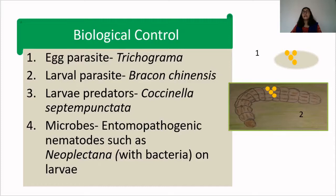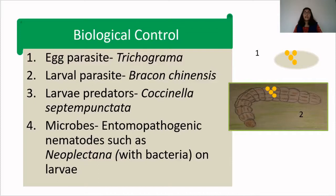The second category is larval parasites. Bracon chinensis is one example. The female lays eggs on the larvae of the Jawar stem borer. The larvae that hatch from those eggs feed on the larvae of the Jawar stem borer, thereby controlling them.